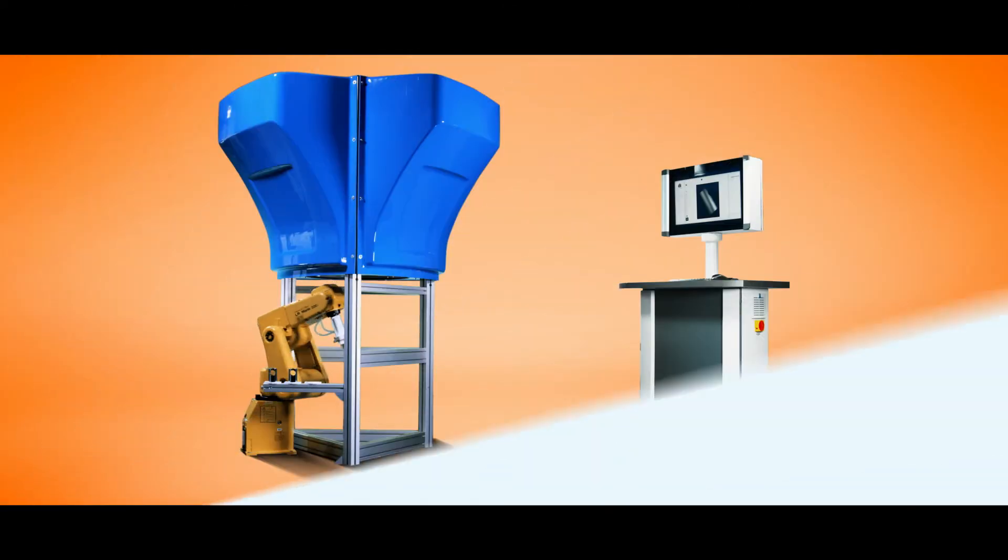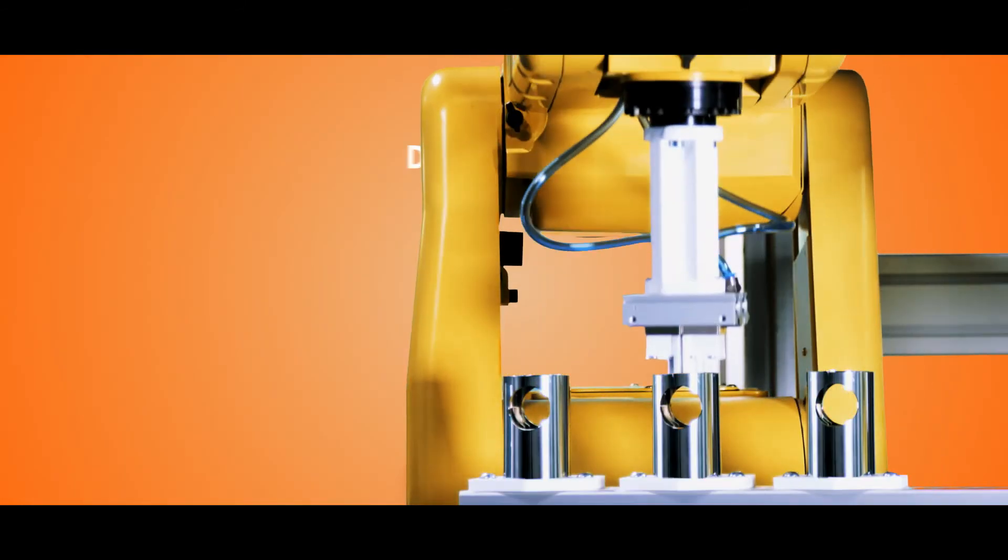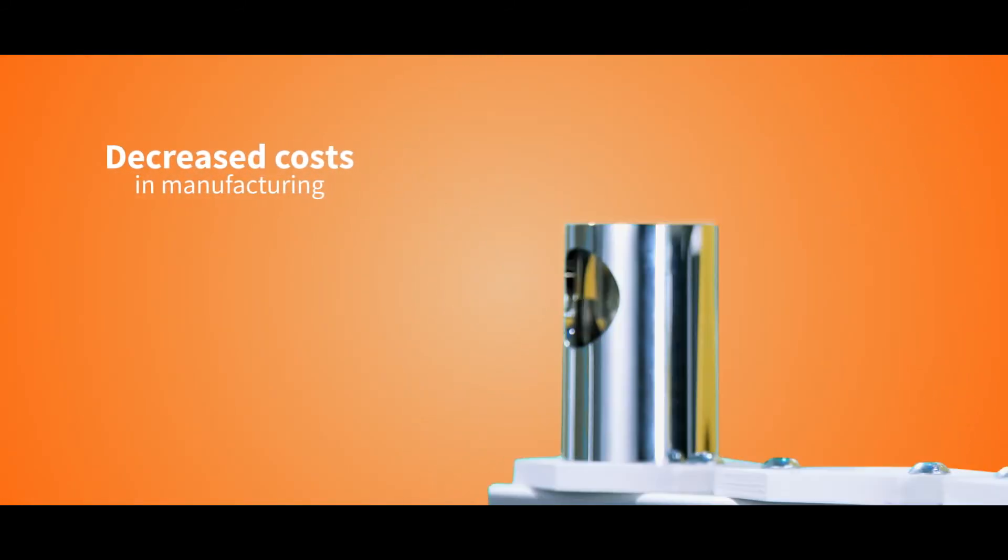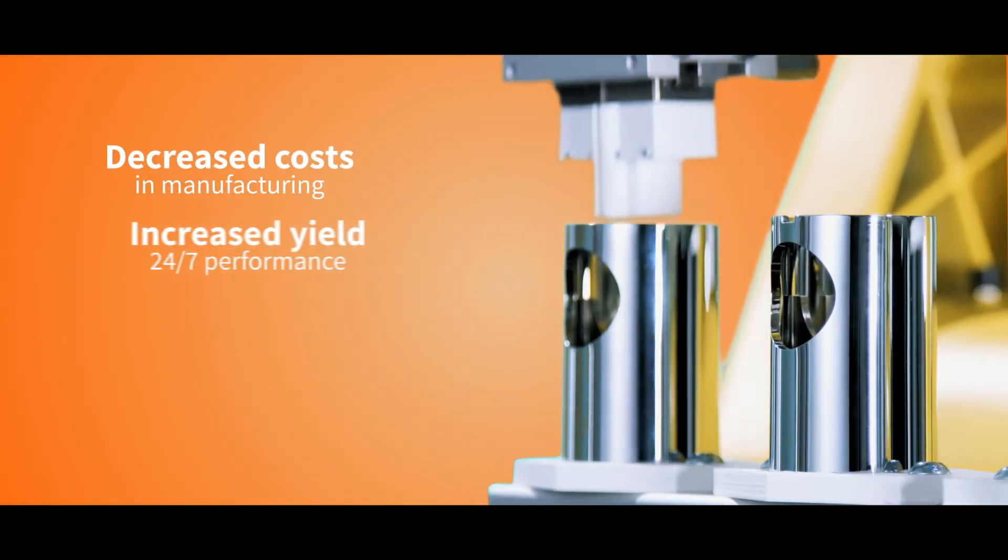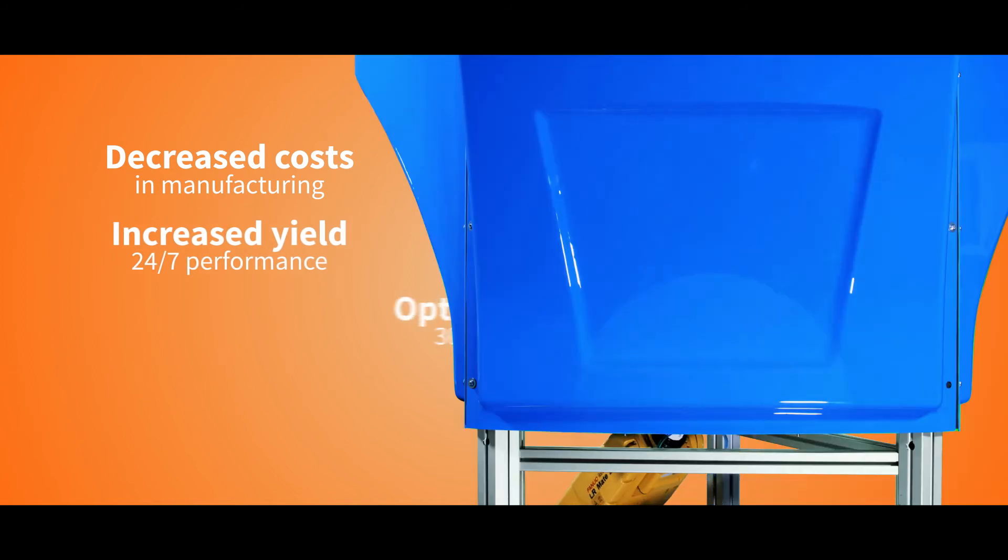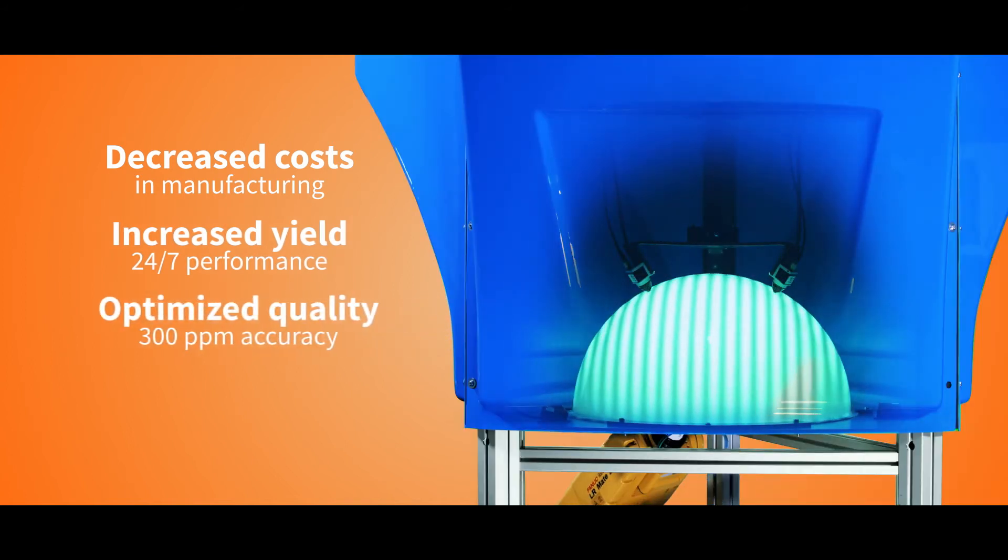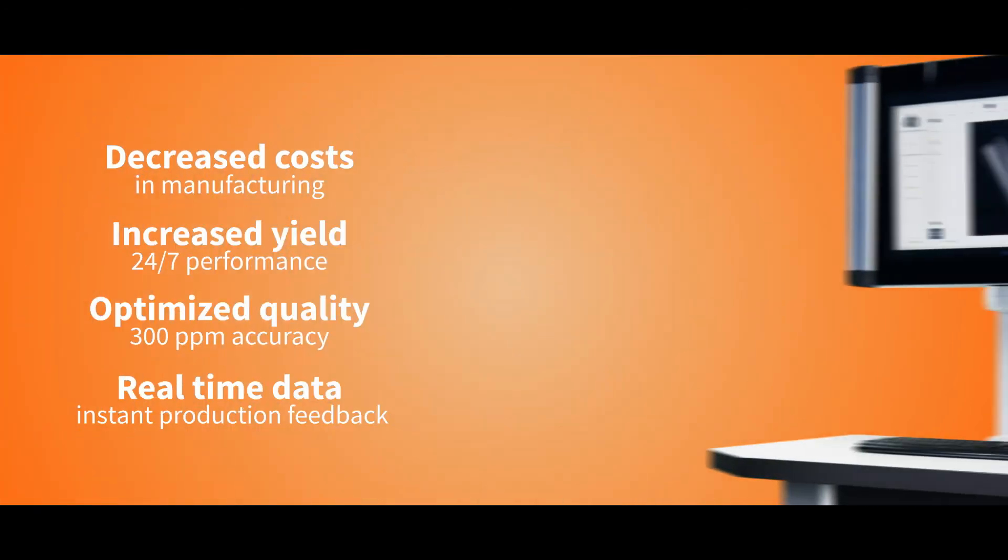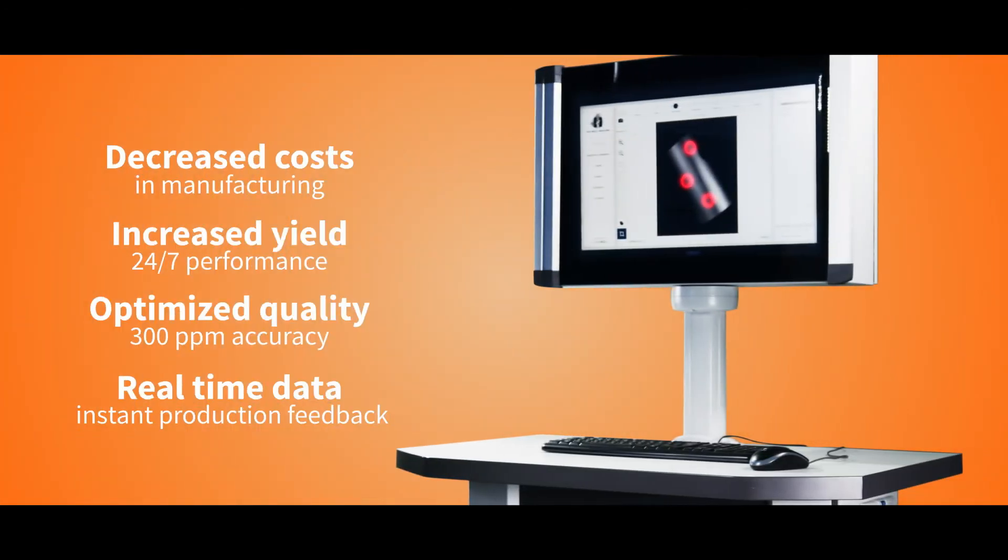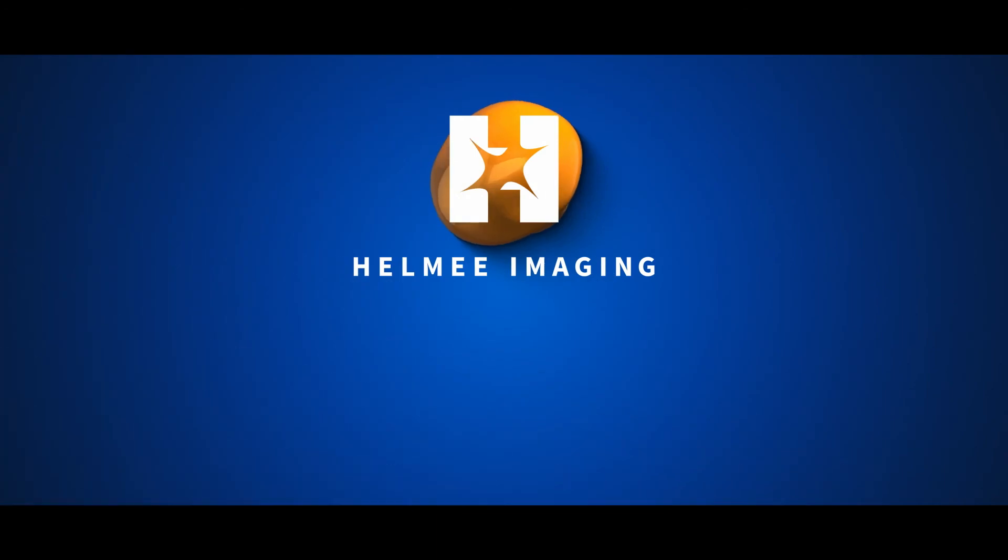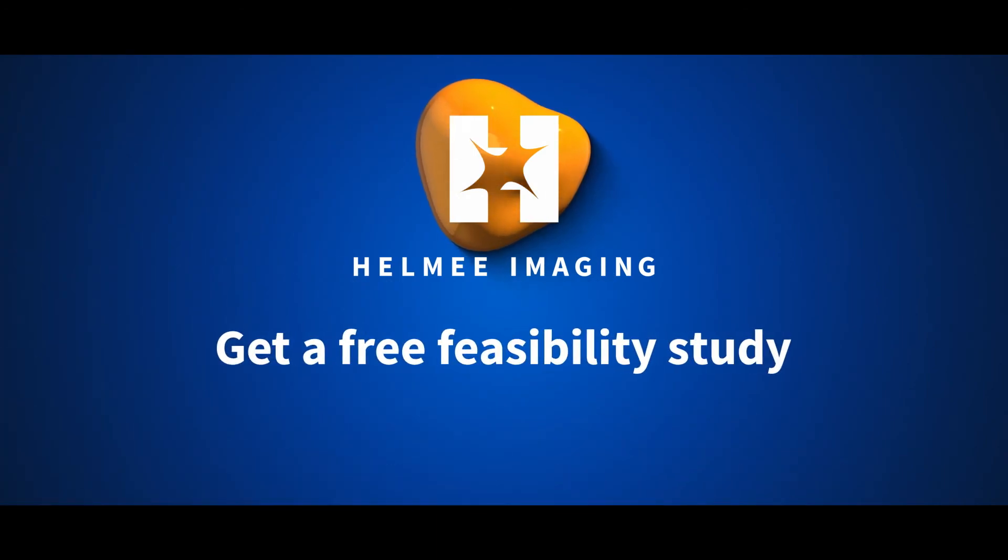The Helimi system delivers decreased manufacturing costs, increased yield with 24/7 performance, optimized quality level with 300 parts per million sorting accuracy, real-time data, and instant production feedback. We'll provide a feasibility study for you, free of charge.